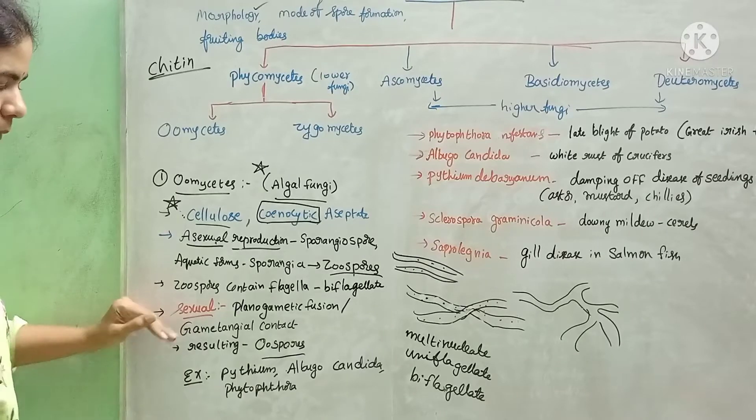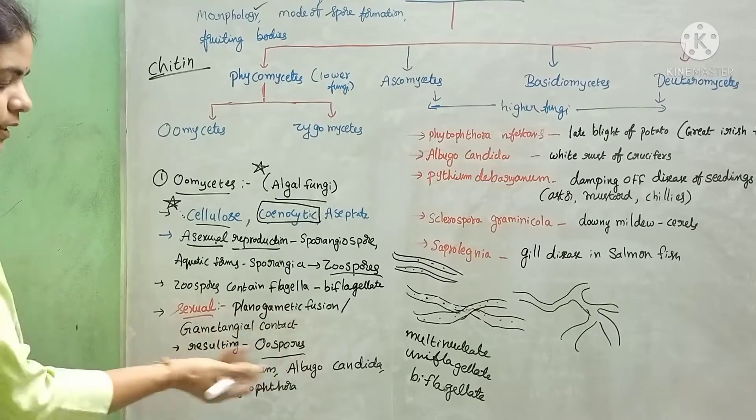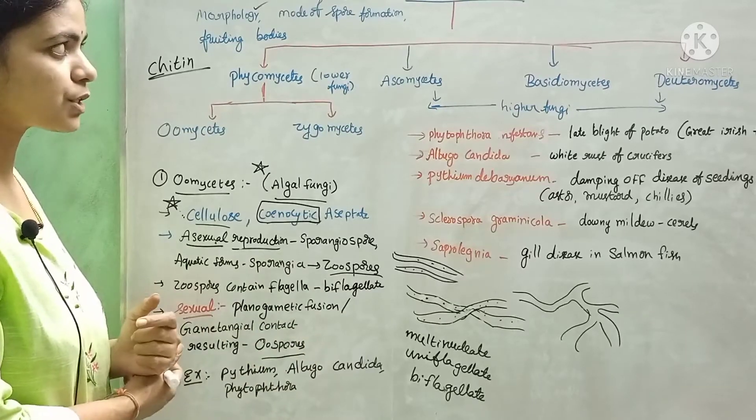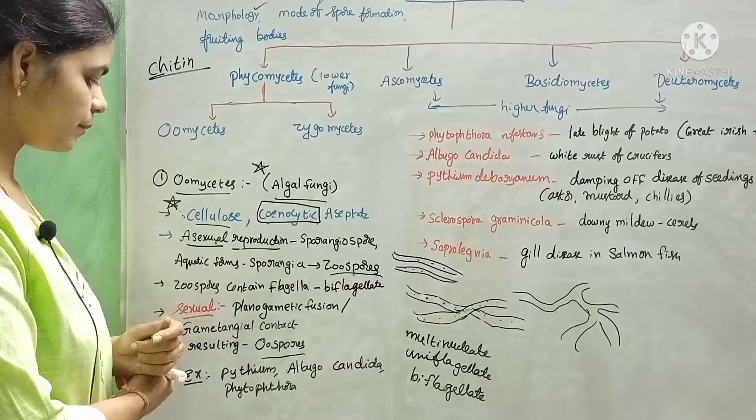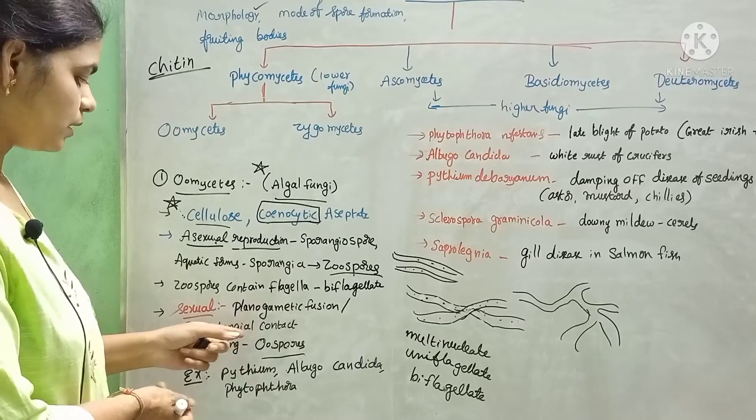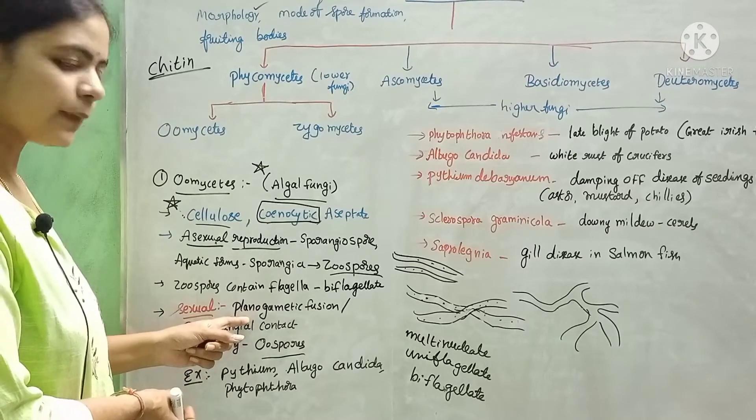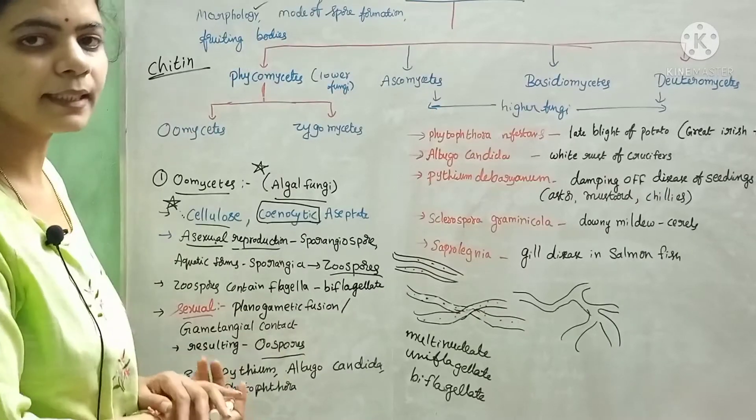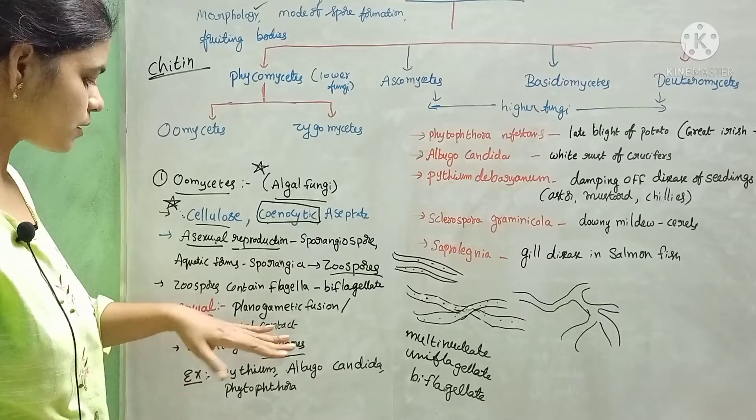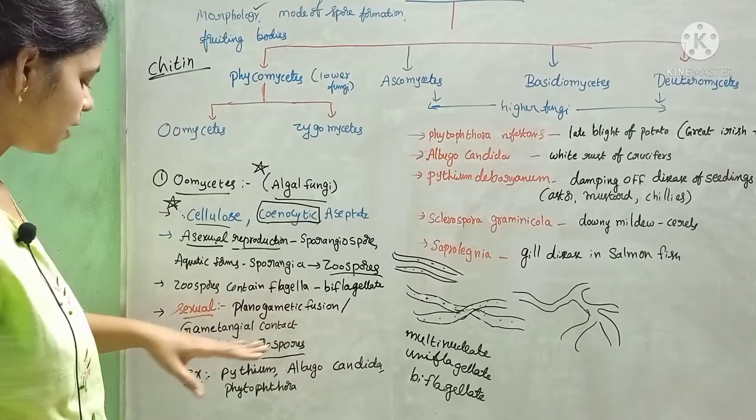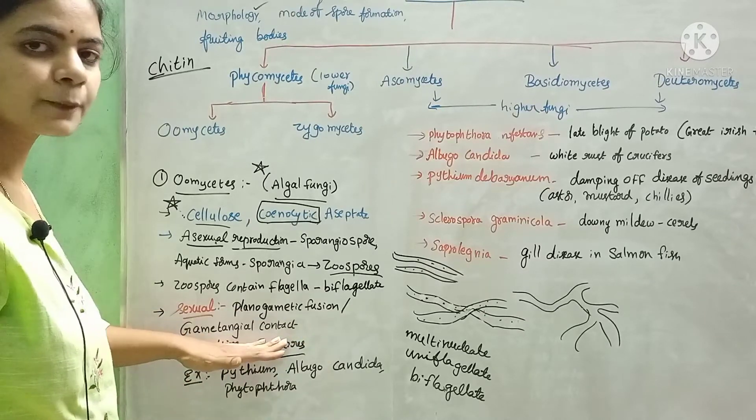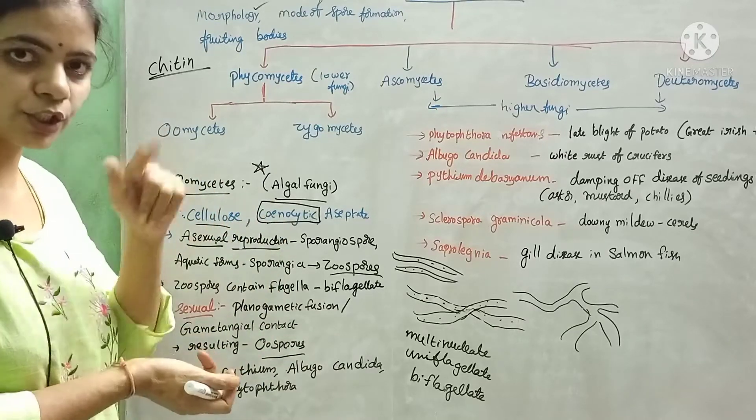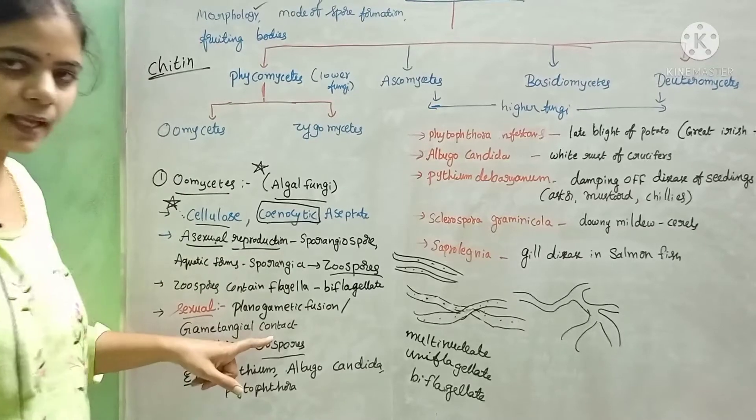Sexual reproduction is by means of planogametic fusion and gametangial contact. Planogametic fusion means fusion of two compatible mating types resulting in the diploid zygote. Gametangial contact is when the two gametes are fused by means of fertilization tube.